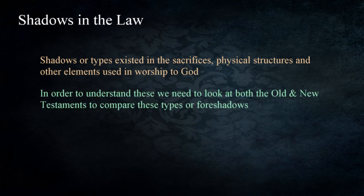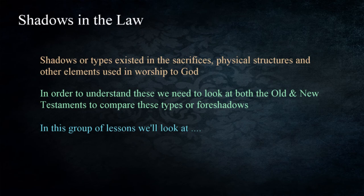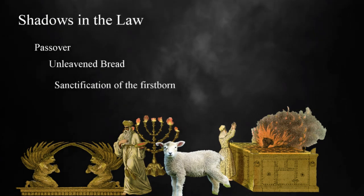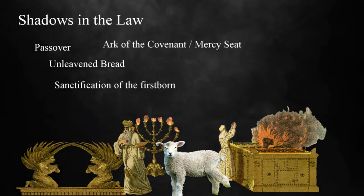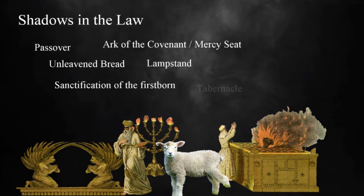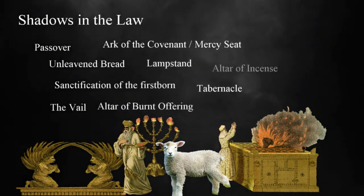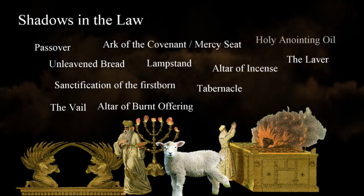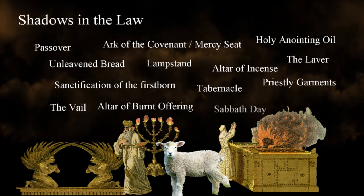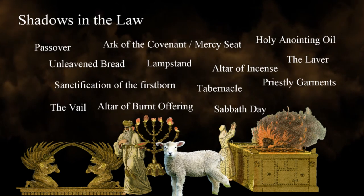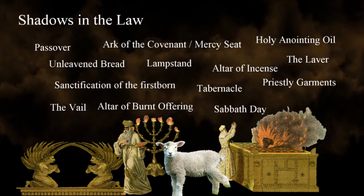These shadows or types existed in the sacrifices and physical structures used in worship to God. In order to understand these, it's important for us to look at the Old and New Testaments together and compare these types or foreshadows. In the next group of lessons, we'll examine the Passover, unleavened bread, sanctification of the firstborn, the Ark of the Covenant and Mercy Seat, the lampstand, the tabernacle, the veil, the altar of burnt offering, the altar of incense, the laver, the holy anointing oil, the priestly garments, and the Sabbath day. As we explore these items, we'll see how they were built, their intended usage, and spiritual connection to the rest of the text.